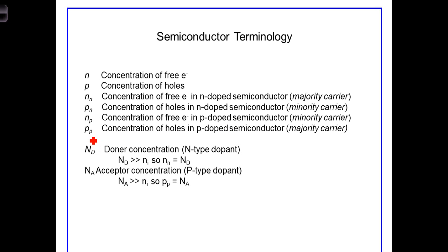Finally, p sub p refers to the concentration of holes in P-doped semiconductor. And in those circumstances, the holes in the P-doped semiconductor will represent the majority carrier. So you have majority and minority carriers in both types of doped semiconductors.